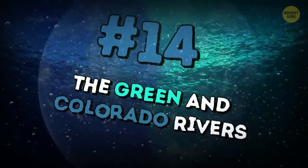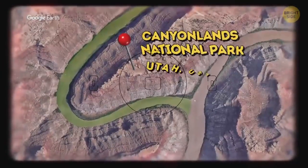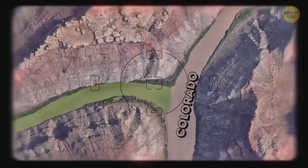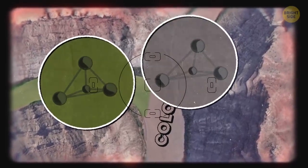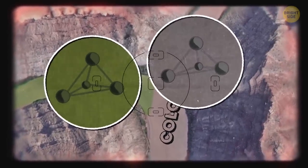The Green and Colorado rivers: The place of their junction is Canyonlands National Park in Utah, USA. Colorado is brown and Green is, yep, green. The colors of these rivers go through rocks with different chemical makeup. That's why they have such a big contrast of colors.